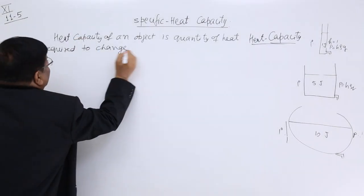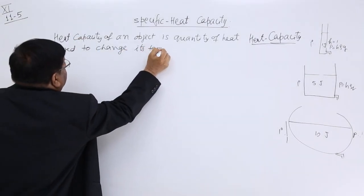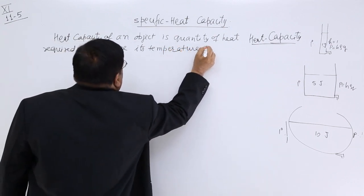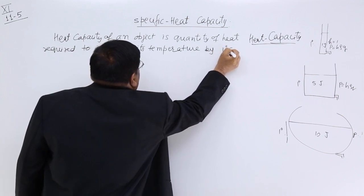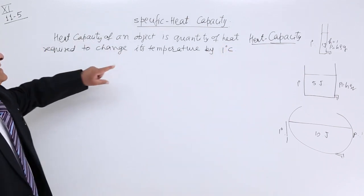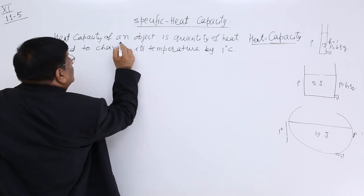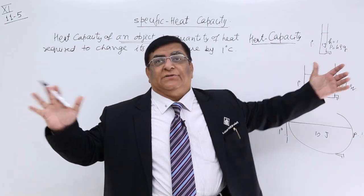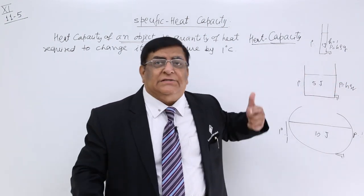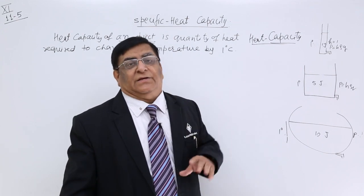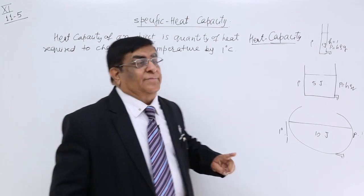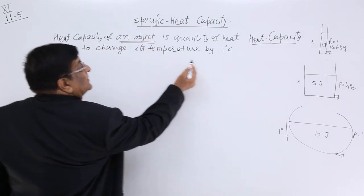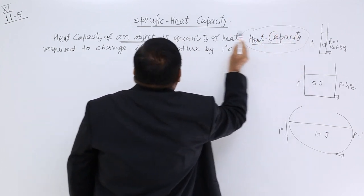Heat capacity of an object is the quantity of heat required to change its temperature by 1 degree. This is heat capacity of an object. If the object is large or if it is small, then its heat capacity will change. Now we come to another parameter — that is specific heat capacity. Heat capacity was for an object; now we will come to specific heat of a material.